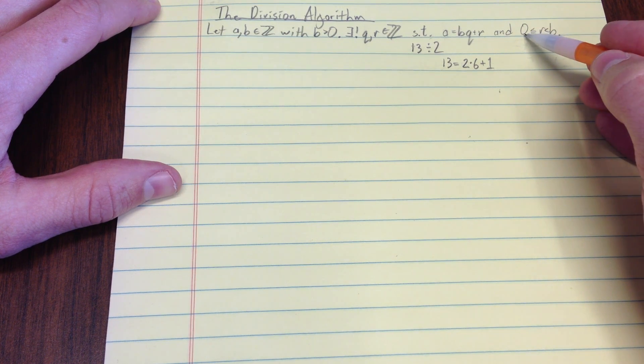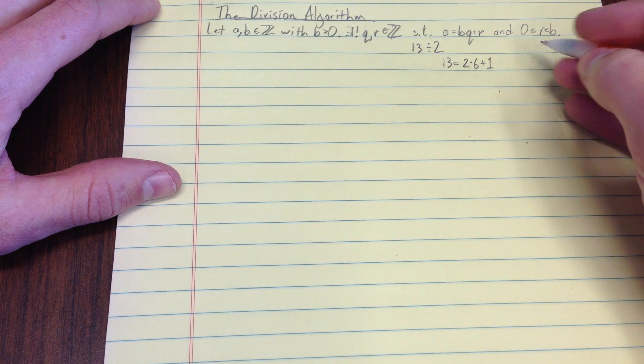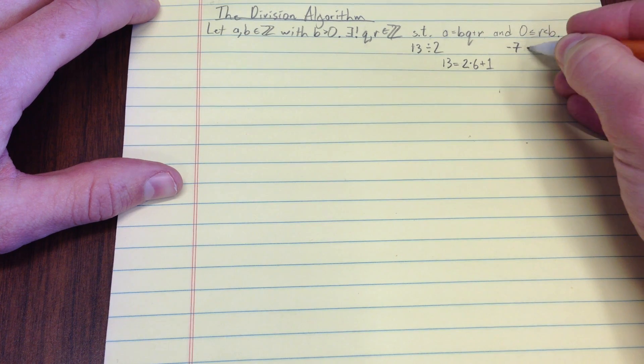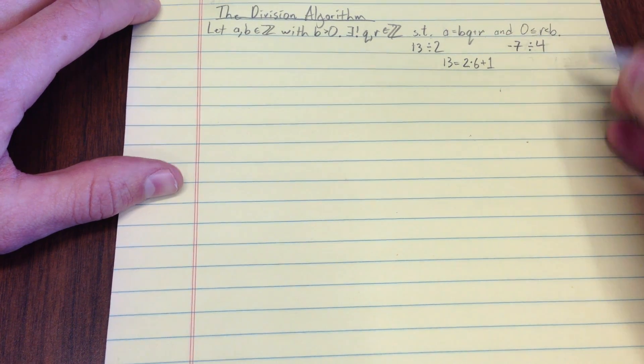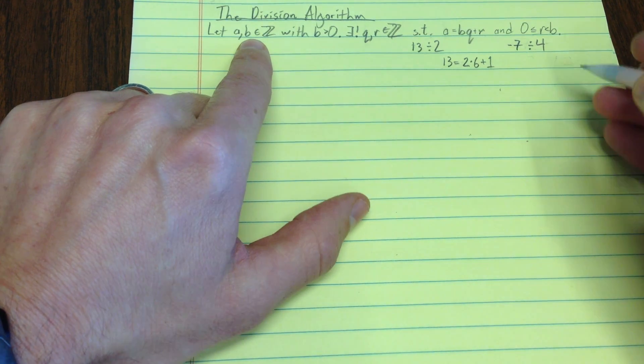Notice the remainder is bigger than or equal to 1 and less than 2. A little less typical but still possible is something like negative 7 divided by 4. Remember only the divisor has to be greater than 0.